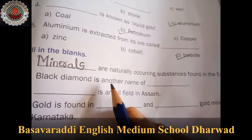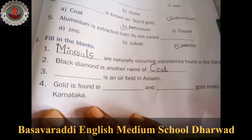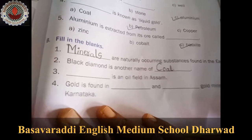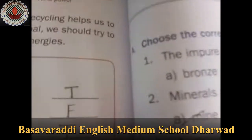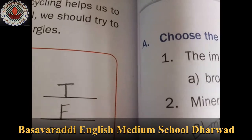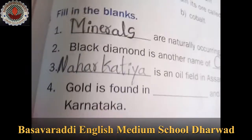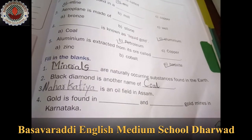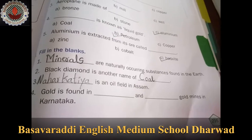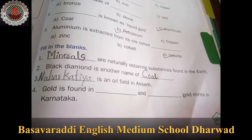Second question: Black diamond is another name of dash — that is coal. Dash is an oil field in Assam — Nahar Katia. Fourth question: Gold is found in dash and dash gold mines in Karnataka — Kolar and Hattie.